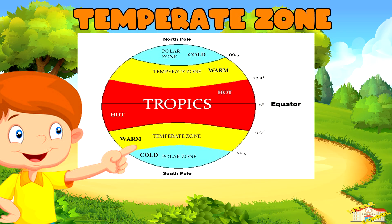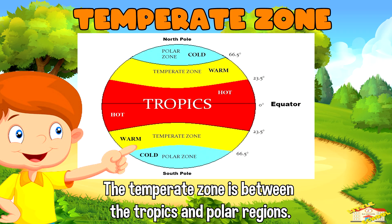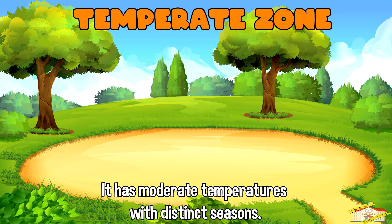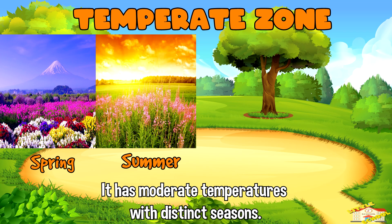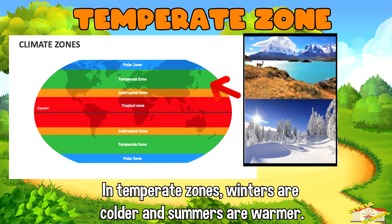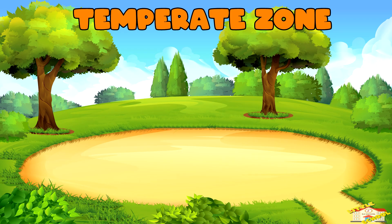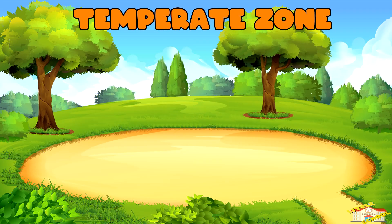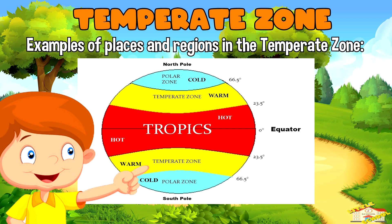The temperate zone is between the tropics and polar regions. It has moderate temperatures with distinct seasons such as spring, summer, fall, and winter. In temperate zones, winters are colder and summers are warmer. Regions in this zone often have forests, grasslands, and varied weather patterns.